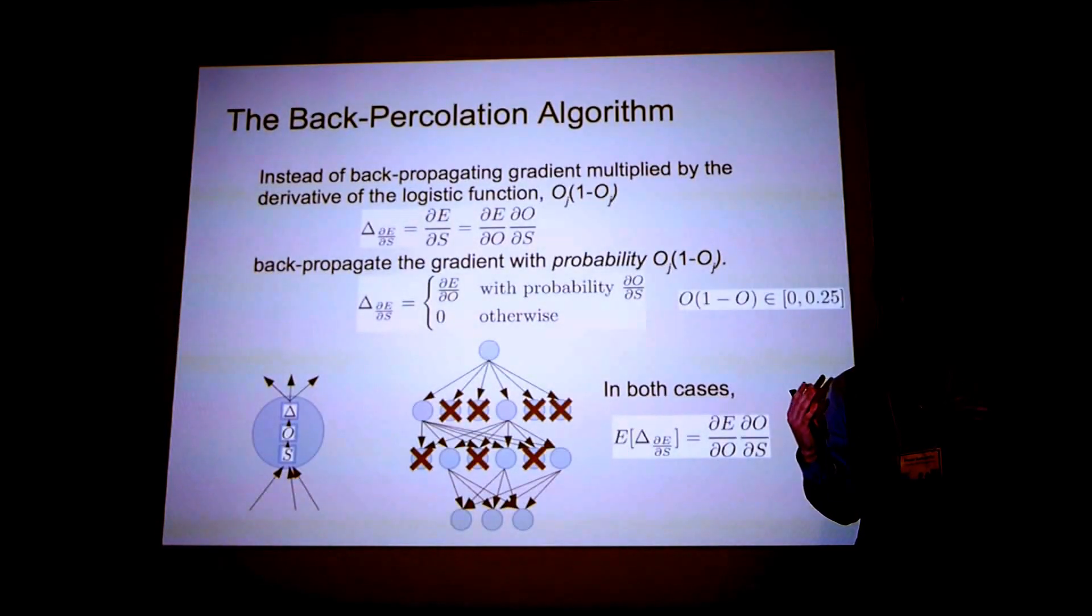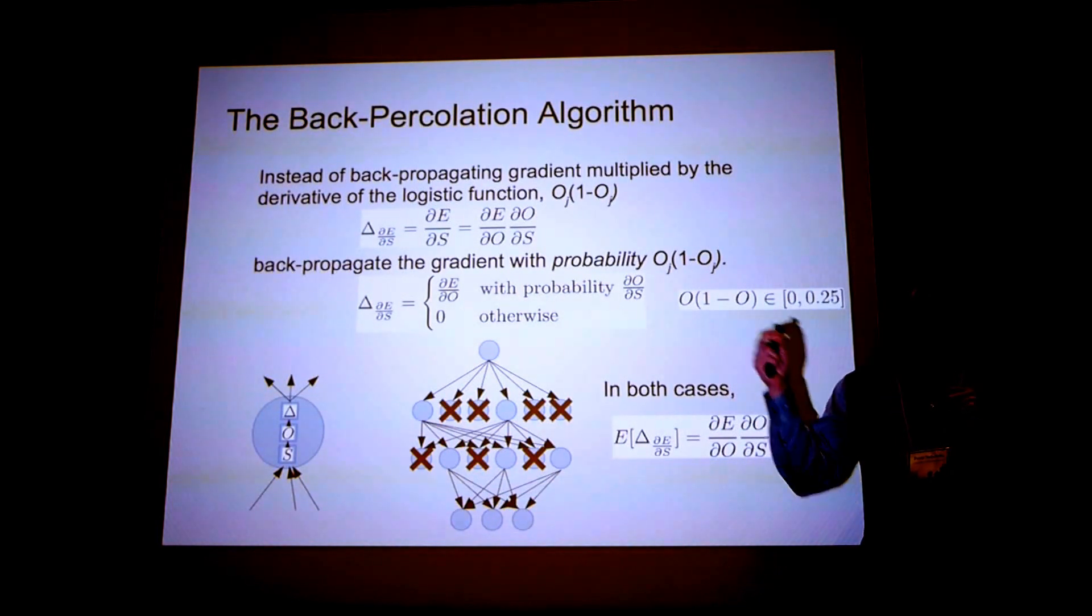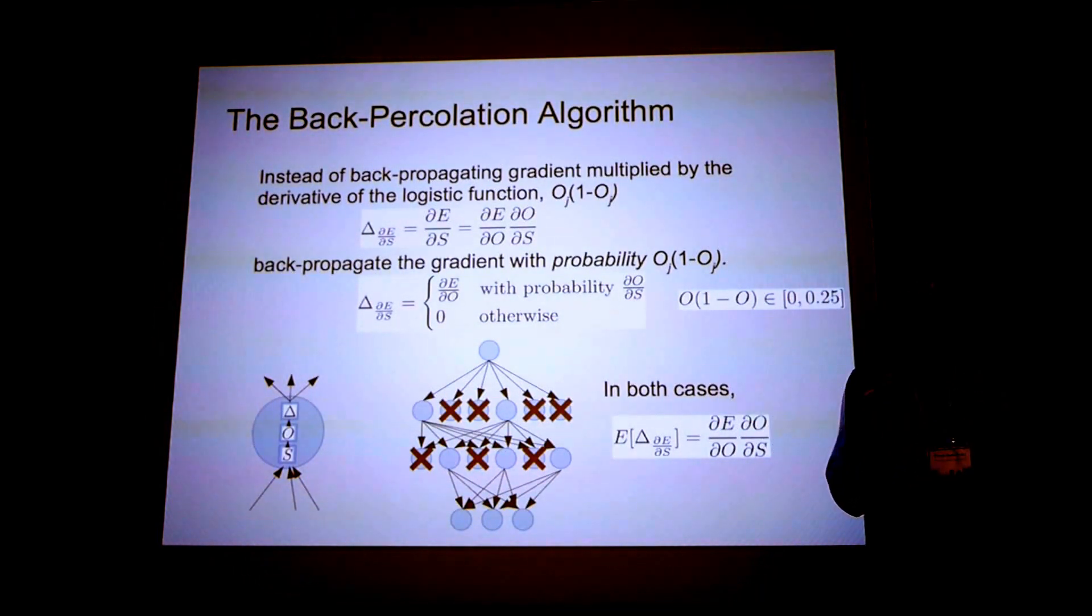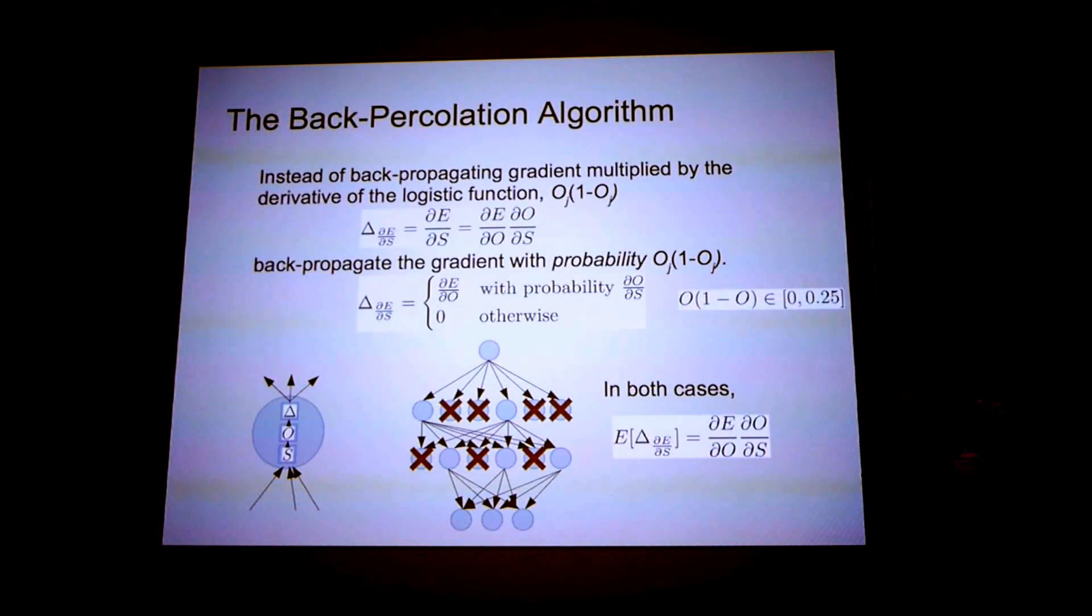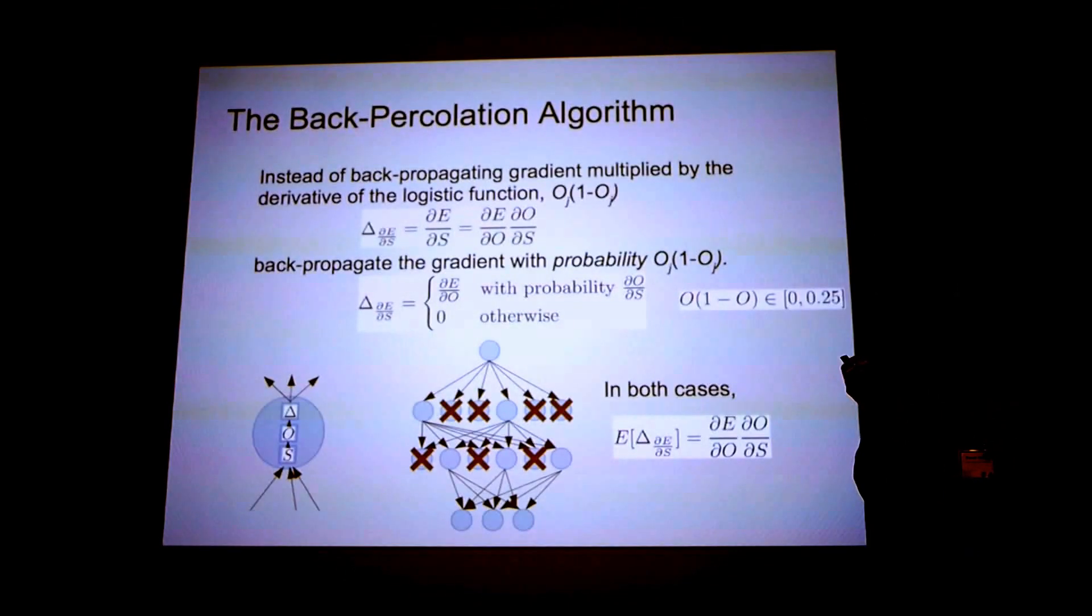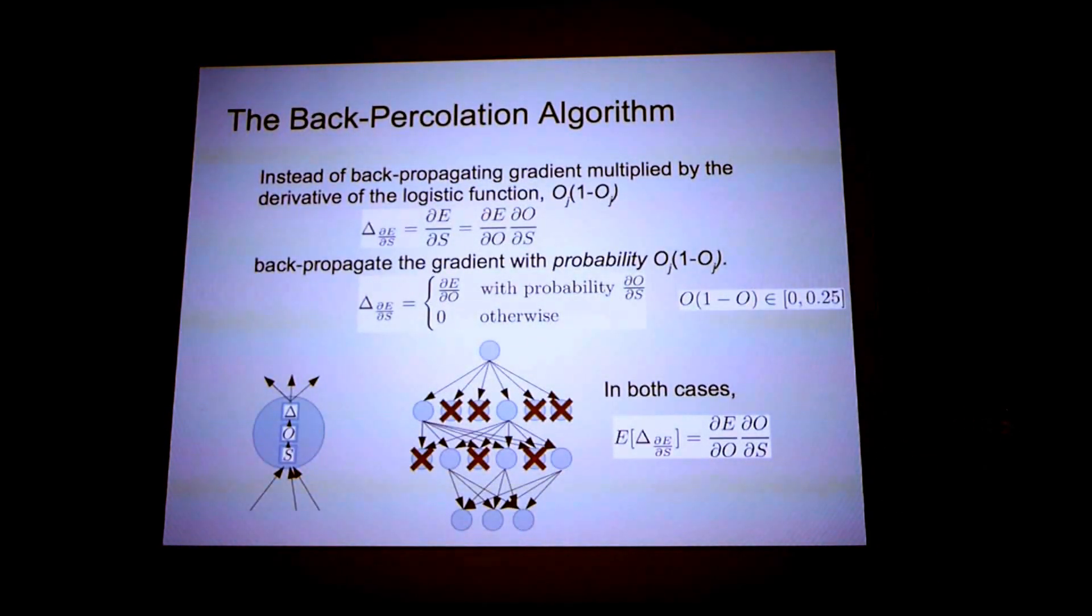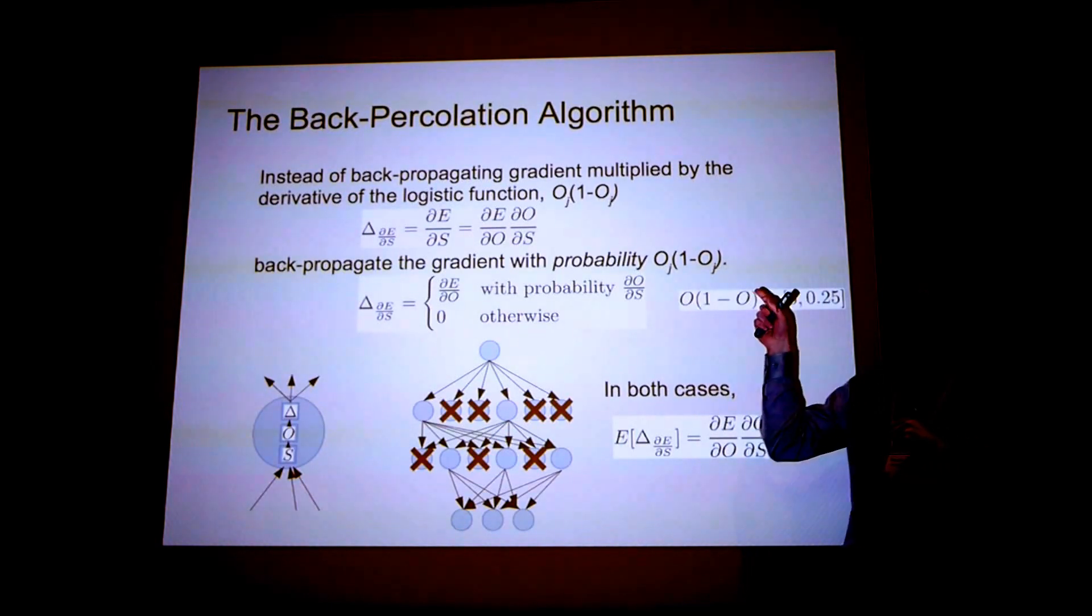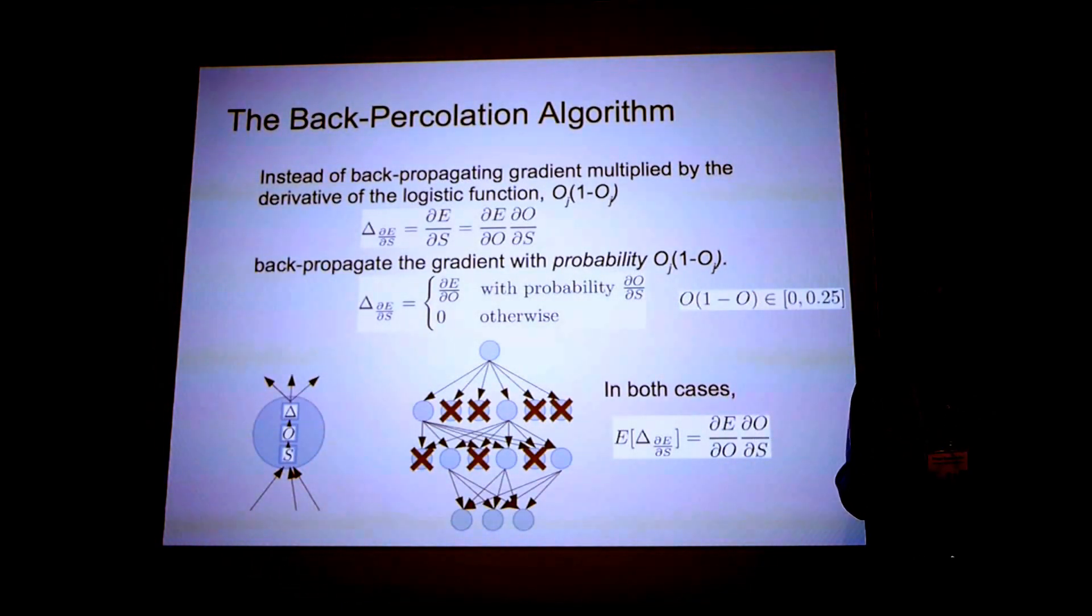So in standard back propagation, when the gradient comes through a neuron, we multiply by the derivative of the transfer function. Instead, we're going to transmit the entire gradient with probability equal to the derivative of the transfer function. So for a sigmoid neuron, the derivative of the transfer function is O times 1 minus O, which is always between 0 and 0.25. So we're interpreting that as a probability.